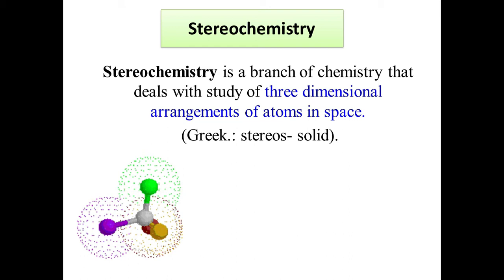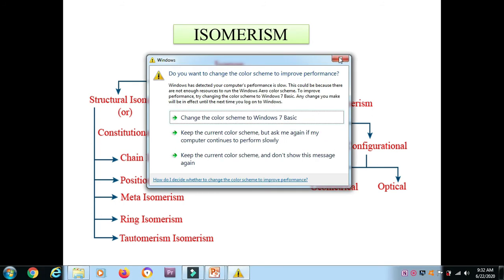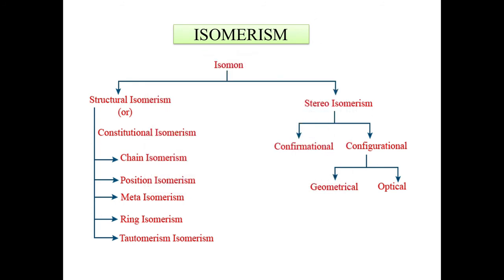What is isomerism? Compounds with the same molecular formula but different physical and chemical properties are called isomers, and the phenomenon is called isomerism. Isomerism is divided into two types: structural isomerism and stereoisomerism. Structural isomerism, also called constitutional isomerism, has five types: chain isomerism, position isomerism, metamerism, and tautomerism. Stereoisomerism has two subtypes: conformational isomerism and configurational isomerism, which further divides into geometrical and optical isomerism.